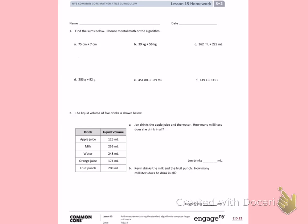A. 75 cm plus 7 cm. I'm going to choose to use the algorithm. So I will add 75 cm plus 7 cm, making sure to place the 7 in the 1s place because it is 7 1s. 5 plus 7 is 12. 7 plus 1 is 8. So my total is 82 cm.